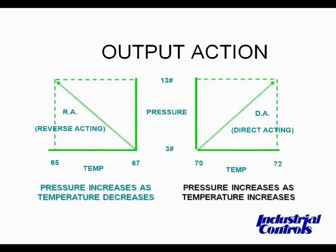In selecting a thermostat, if the action is not known, typically we work backwards from the final control device fail position and the action needed. For example, in the chart on the right side, if we knew that a normally open valve was being used for heating, we would apply a direct-acting thermostat. Therefore, as the temperature of the room increased, we would want the output pressure of the thermostat to increase and therefore close the valve. So a direct-acting thermostat in a heating application with a normally open valve would give us the result and action that we desired.